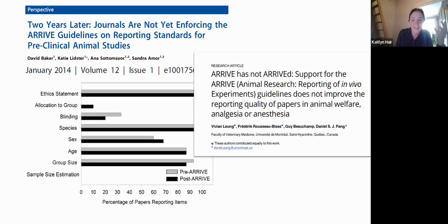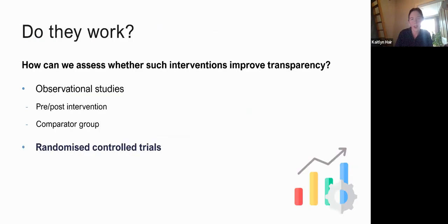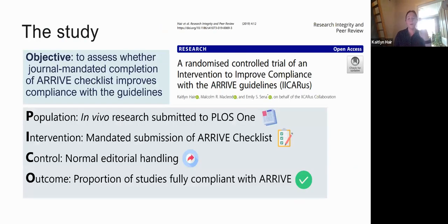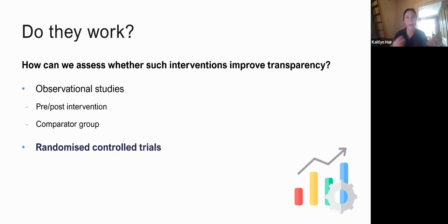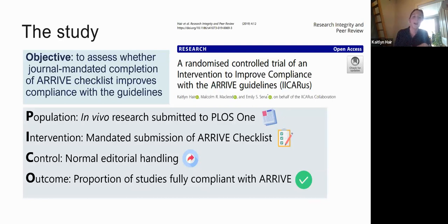The overall conclusion is that ARRIVE hasn't seemed to improve transparency of reporting — at least, just endorsement of ARRIVE hasn't. This really suggested that we might need a more hands-on approach. Another approach is to conduct a randomized controlled trial, where we have more control over the intervention and can get closer to a cause-and-effect relationship — actually answering whether the intervention leads to improved transparency.